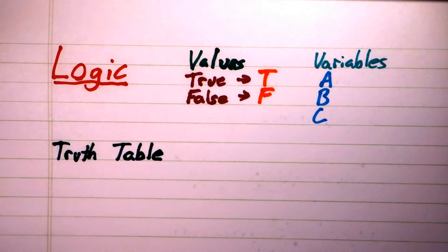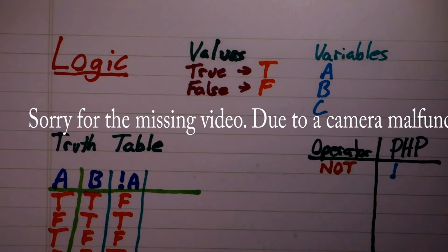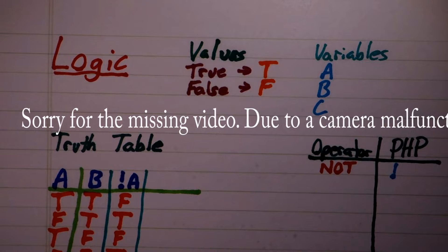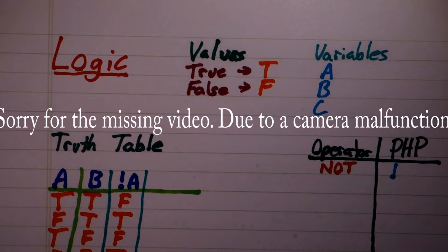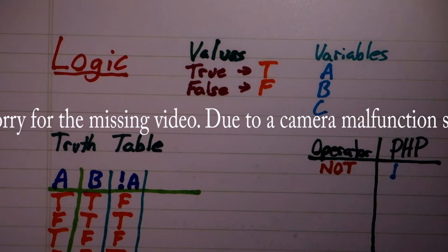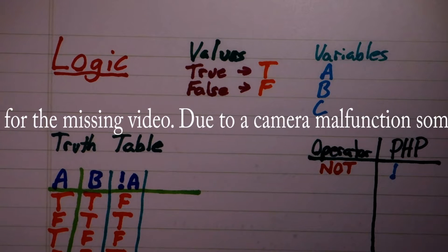To use one, we simply enumerate all possible permutations of the variables involved. For a single variable, there will be two permutations. For two variables, there will be four permutations. For three variables, there will be eight, and so on.